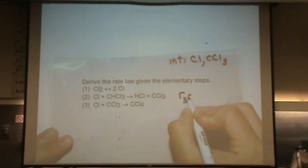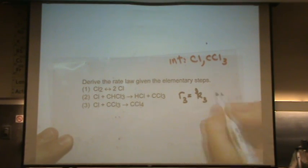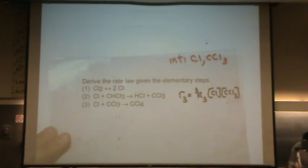So my answer is, rate three equals K3, CL, CCL3. Unfortunately, both intermediates are in my answer right now. And that's going to cause quite a disaster.